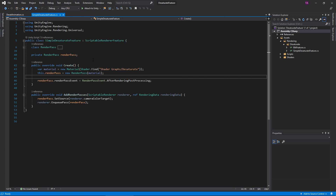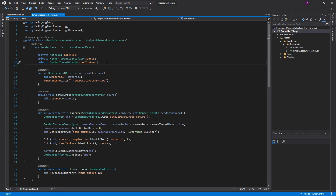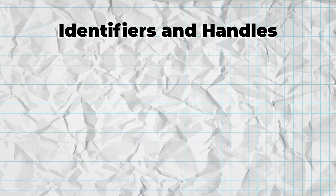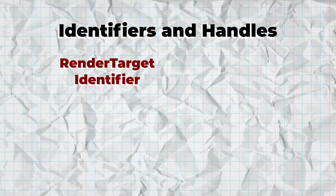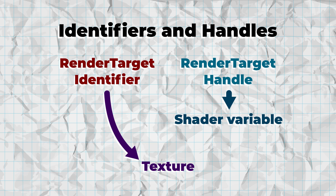Now let's look at the RenderPass class. First, we have a few instance variables to hold the material, RenderSource, and a temporary RenderTarget. Take a closer look at RenderTargetIdentifier and RenderTargetHandle classes. These both describe a RenderTarget, which is a texture to save a render to. The difference is, in simple terms, a RenderTargetIdentifier points to a texture directly, while a RenderTargetHandle points to a texture variable in the shader, which can then be filled with an actual texture. So a shader cannot write to a RenderTargetIdentifier until it has been given a texture, but a RenderTargetIdentifier is ready to go by definition.